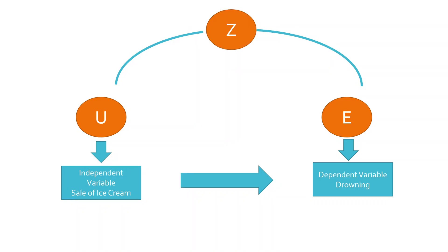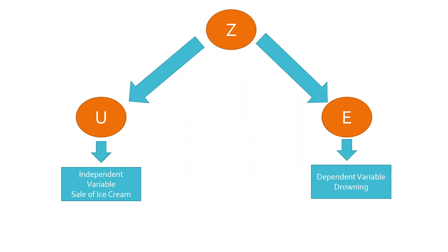This variable — the season — is considered to be the confounder. When we introduce Z into the model, we want to see the effect of confounders on the dependent and independent variable. It is quite possible that there will not be any relationship between independent and dependent variable on their own. But because of this confounder, we are able to get the relationship. The correlation between dependent and independent variable would be exactly zero, but because Z is causing X and Y simultaneously, we get the relationship. This is the problem of endogeneity.